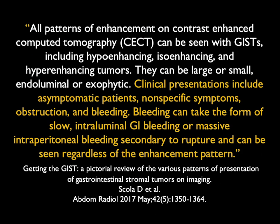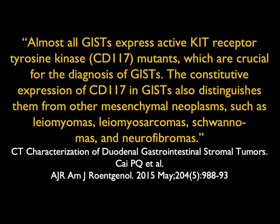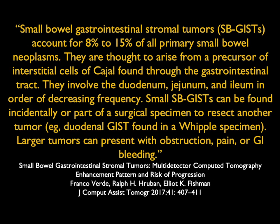The duodenum is the most common small bowel location and GIST can present with GI bleeding, particularly when lesions are relatively small. Patient age is like adenocarcinoma, 50 to 60. GI bleeding, anemia, abdominal pain, and weight loss are common presentations. Obstruction is rare because the tumor is usually growing exophytically. GIST tumors express active kit receptor tyrosine kinase CD117 mutants — they are the only tumor that does so — which allows separation from other tumors and enables treatment with Gleevec. GIST tumors represent up to 15% of all primary small bowel tumors.